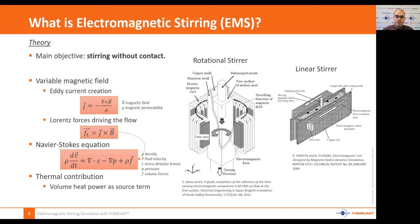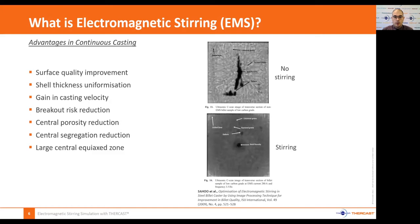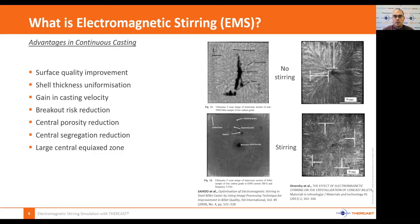What are the benefits of stirring? Electromagnetic stirring helps improve surface quality and also helps achieve a more uniform shell thickness. With that, you can increase the casting velocity and reduce the risk of breakouts or surface defects. You can also reduce central porosity and reduce central segregation, as shown in examples from literature.